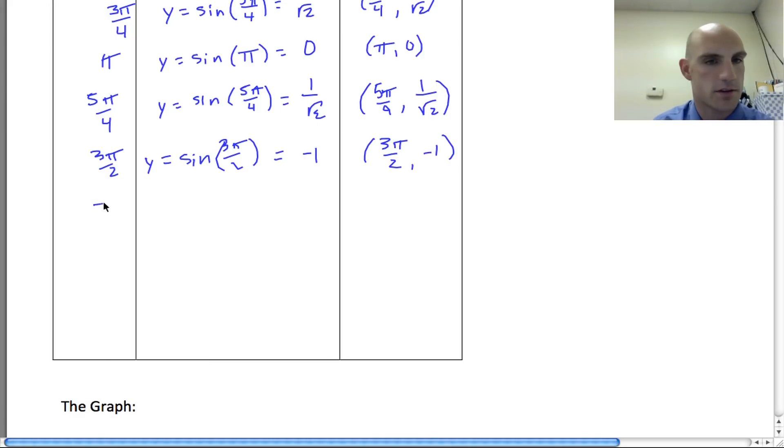If you don't know where I'm getting these values, we're looking at the unit circle. This is equal to -1/√2. I think I made a mistake. Got to keep those negatives straight. 7π/4, -1/√2. And then I finally make my way to 2π, y = sin(2π), which is going to be equal to zero.